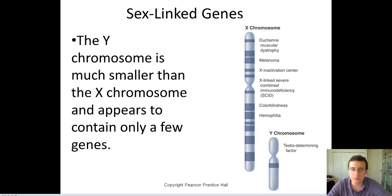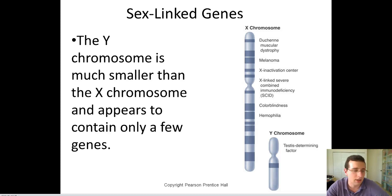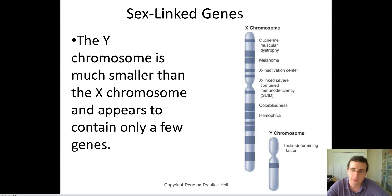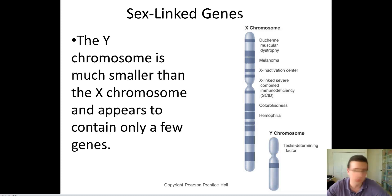The X chromosome, in addition to carrying a lot of other kinds of information, also has sites of diseases such as hemophilia, colorblindness, severe combined immunodeficiency, the X-inactivation center, melanoma, Duchenne muscular dystrophy, and several other diseases.